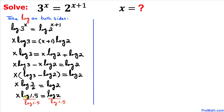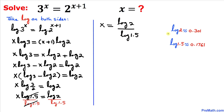These two cancel out, so we end up with x equals log of 2 divided by log of 1.5. Now if we use a calculator, we know that log of 2 is approximately equal to 0.301 and log of 1.5 is approximately equal to 0.1761.